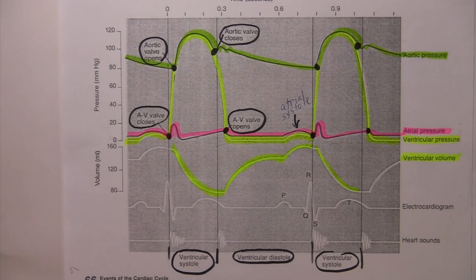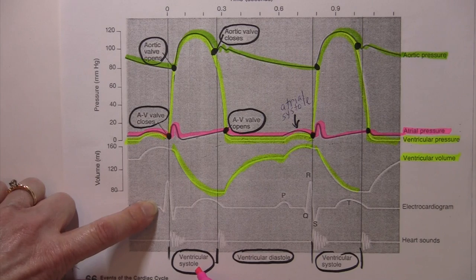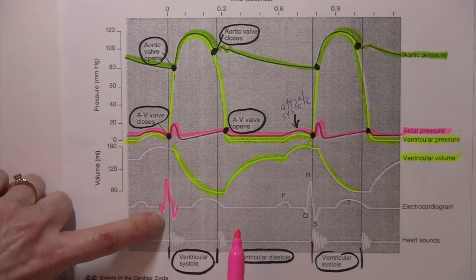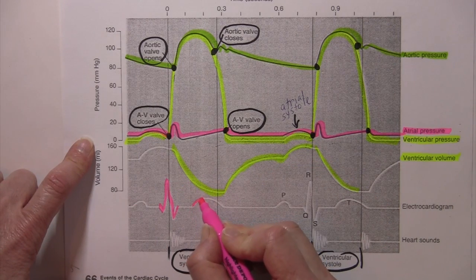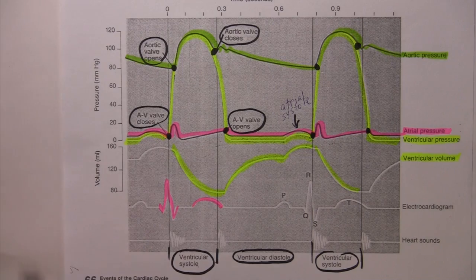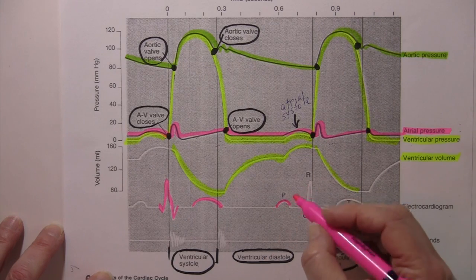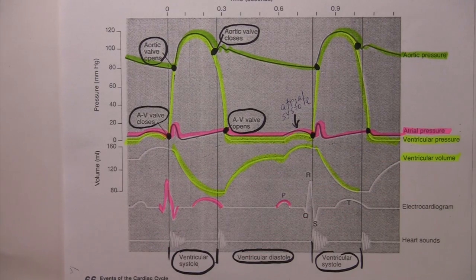Let's take a look at the EKG line. For ventricular systole — for ventricular contraction to occur — an electrical message swept through the heart. That electrical message is called the QRS complex. Notice how the QRS complex is occurring just prior to ventricular systole. Then here's the T wave — that repolarization occurring just prior to ventricular diastole. And then remember the P wave: P wave is atrial depolarization, and you can see how atrial depolarization occurs just before atrial systole.